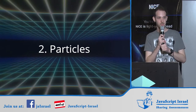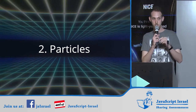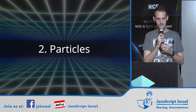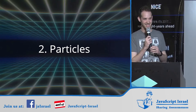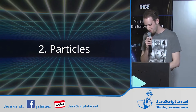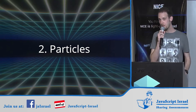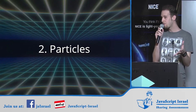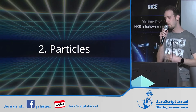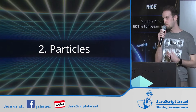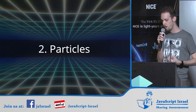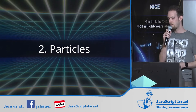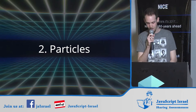Next: particles. There was a question about video support, but we'll answer questions at the end. What are particles? Particles are numerable objects — they don't have to be tiny — that are animated across the page using a particle system. It's easier to understand when you see it rather than when I explain it.